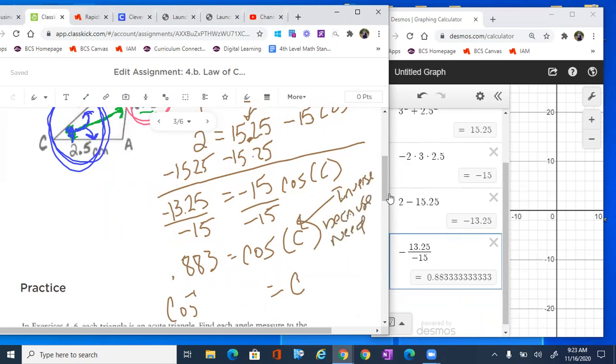I'm gonna put cosine inverse 0.883 into Desmos. So let's do that real quick. So cosine, remember when we type in the inverse, it's like typing in an exponent, but it's not actually an exponent, 0.883.